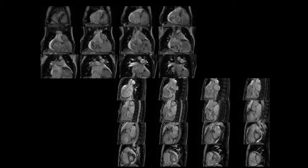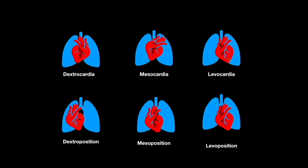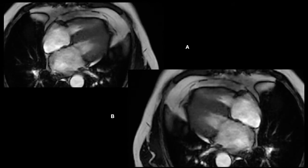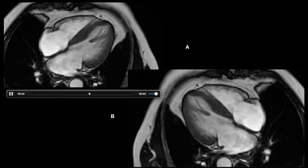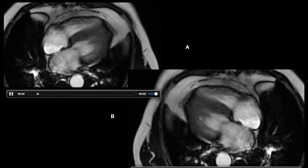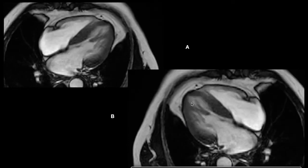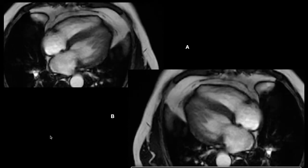If the axis is directing to the left, then it will be levocardia. If it is directing anteriorly and inferiorly, then it will be mesocardia. If it is directing to the right, it will be dextrocardia. Similarly, if the heart is predominantly positioned to the left of the thorax, it will be levoposition. If it is predominantly in the center, it will be mesoposition. And if it is on the right side, that will be dextroposition. In scene A, the axis of the heart is directing to the left, so that will be levocardia. In scene B, it will be directing to the right — that will be dextrocardia.